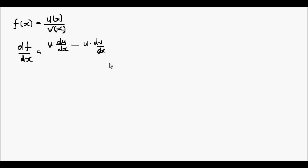So up till now it's similar to the product rule, except we have a minus instead of a plus. But here's where the difference comes in: we have to divide this all by the bottom part squared. So that is the quotient rule — v times the derivative of the top part, minus u times the derivative of the bottom part, all over v squared.